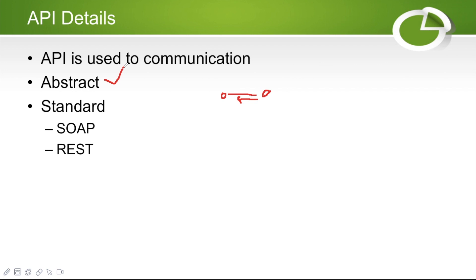Abstraction means I don't need to understand how Facebook actually built their login system. I just need to write two lines of code to send and process the data. I don't need to rebuild whatever complex process they have built. I just send some particular data and get a particular response. APIs also follow standards for communication.